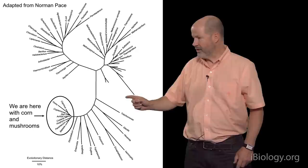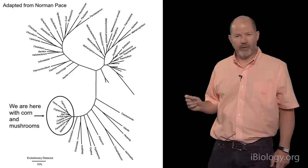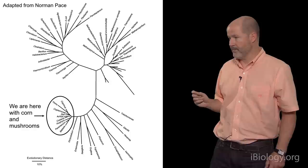Everything lying outside of this circle is a microbe — single-celled organisms smaller than you can see with your naked eye. For as much as we can appreciate biological diversity that you can see, the true diversity of life is beyond the resolution of the human eye, and we have to use other methods to really understand how it works.